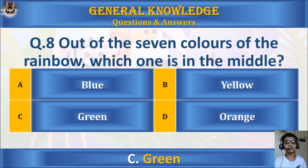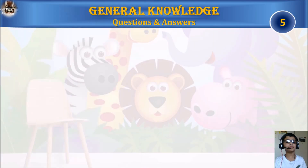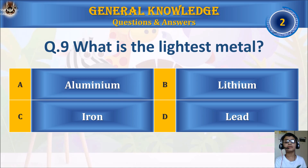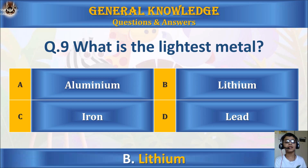The answer is C: Green. Question 9: What is the lightest metal? A: Aluminum, B: Lithium, C: Iron, or D: Lead. Your time starts. The answer is B: Lithium.